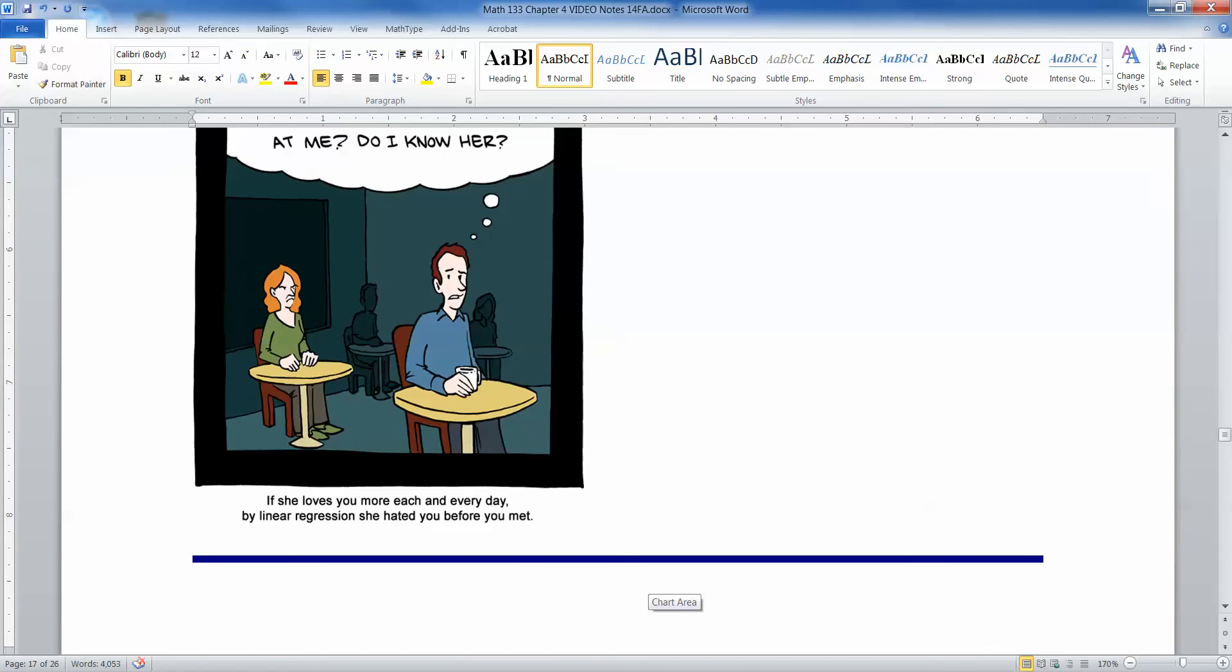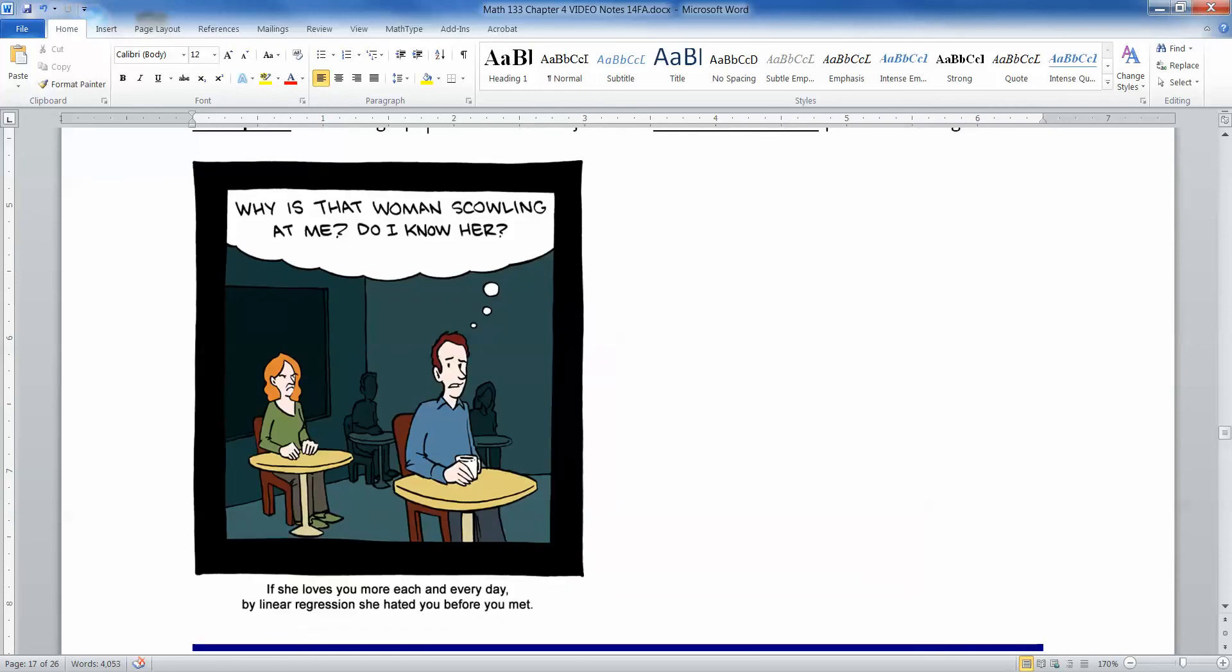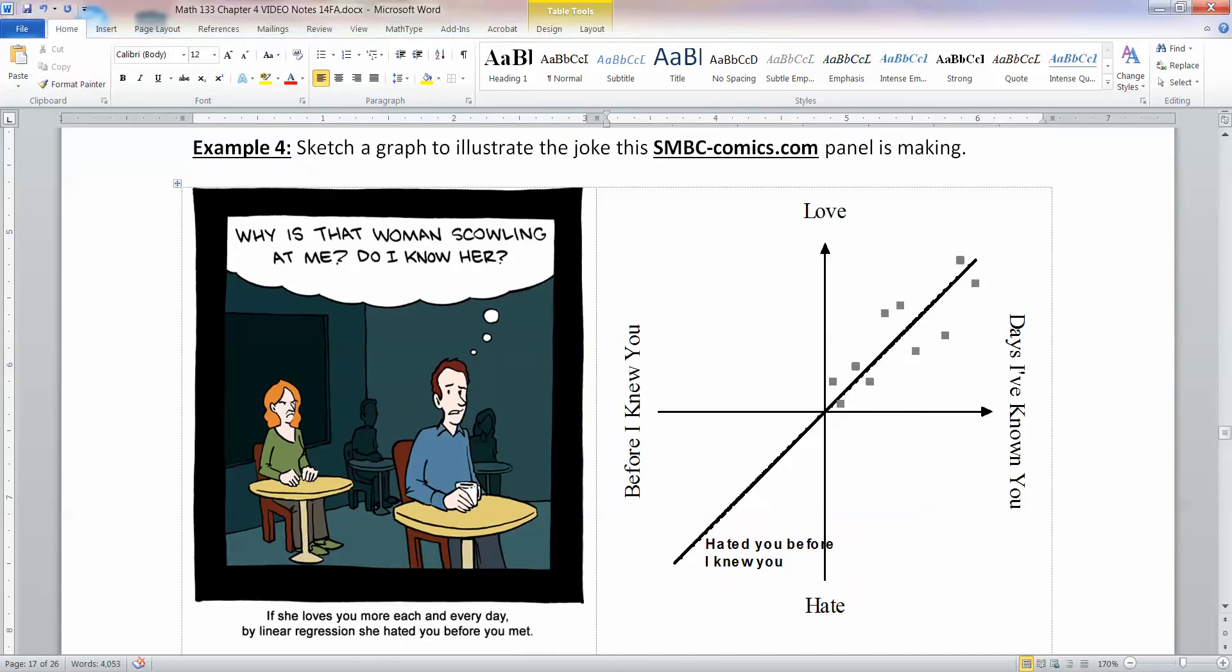Last but not least, we have a joke here and I want to discuss it. So we have a graph that illustrates this particular idea, which is this woman is scowling at me. Do I know her? And it says, if she loves you more and more every day by linear regression, she hated you before you met. So we want to make a sketch of a graph that kind of explains that. So let me draw that in. So here we have it over here. When you haven't met a person at all, then you're at zero. So that's the moment you meet them. And then from then on, you start falling in love with them.